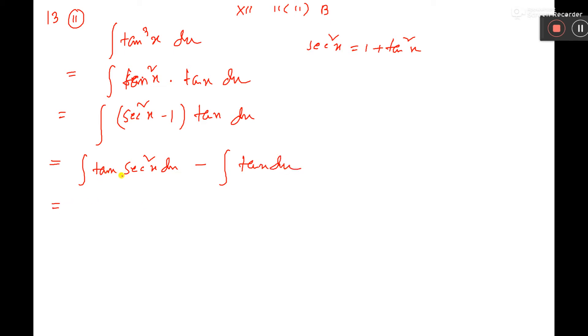Now here you see, here if you consider tan x equal to z, then tan x differentiation is sec square x dx equal to dz. So this one I consider z, so this one will be dz.